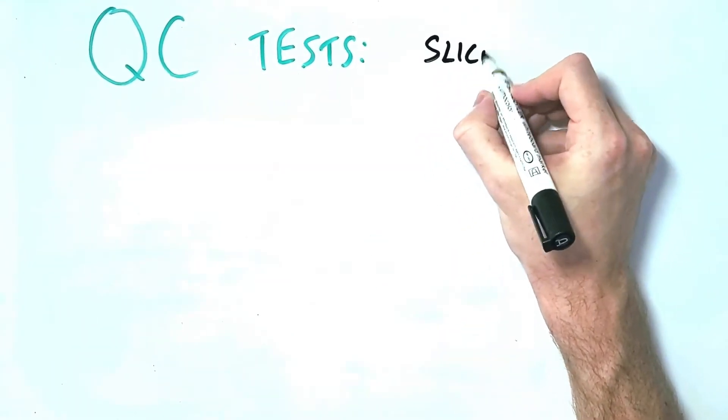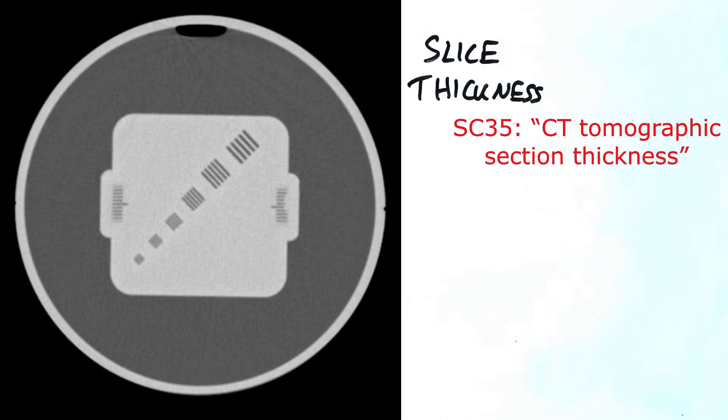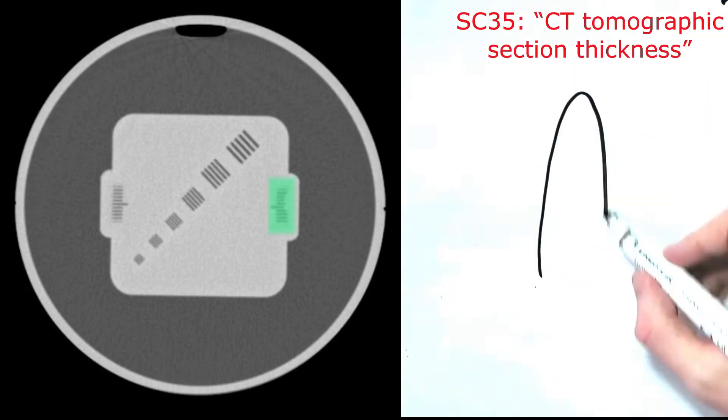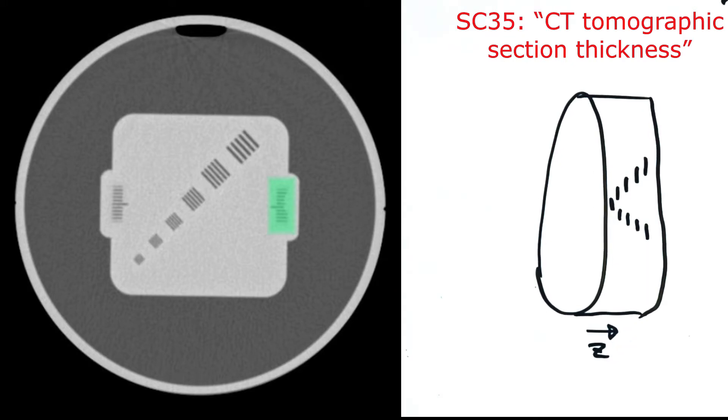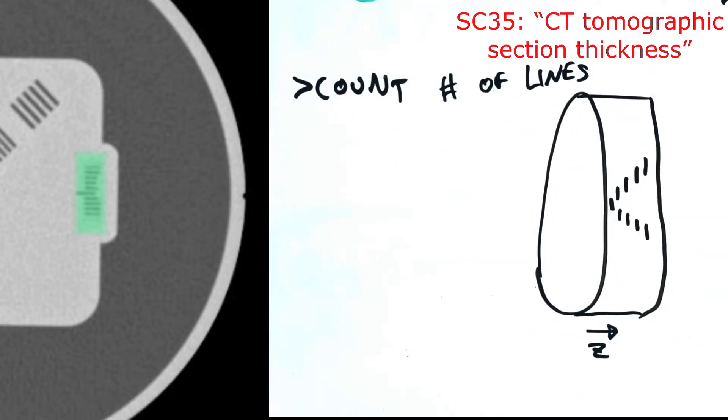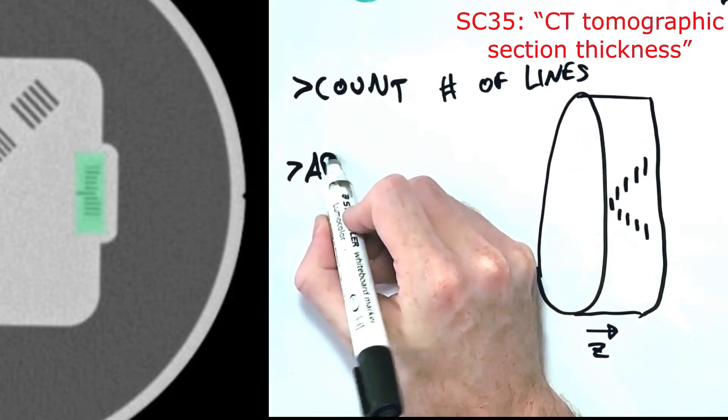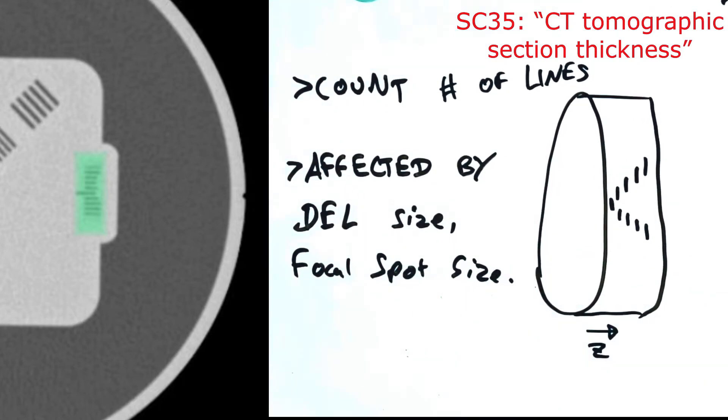Slice thickness can be measured by using a phantom with lines spaced at set intervals along the z-axis. So the phantom itself looks like this and if you were to look at this area from the side, these lines diverge along the length of the z-axis. So we can count the number of lines and assess how thick our slice is. The accuracy of the slice thickness relative to the selected value is dependent on the detector element size and the size of the focal spot in the tube. Slice thickness should be assessed monthly.